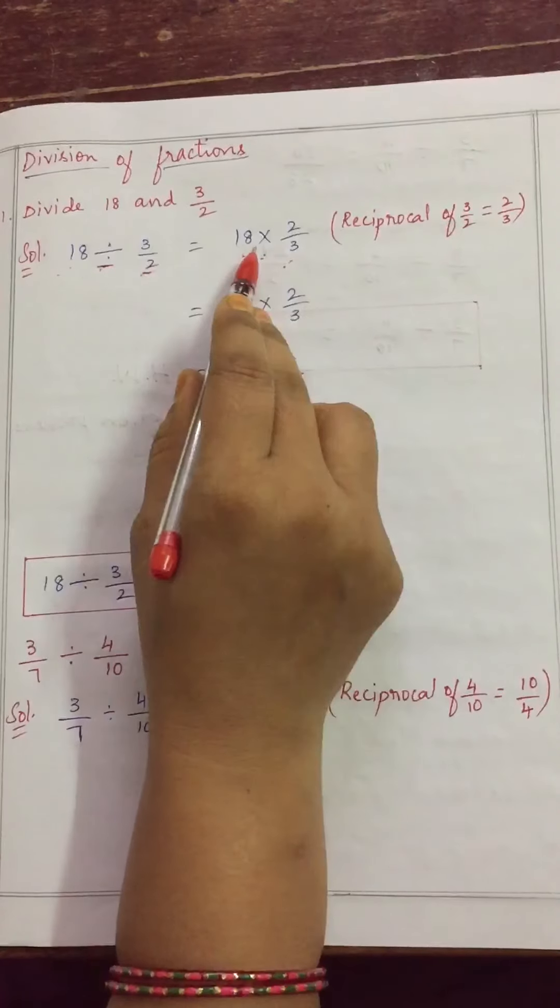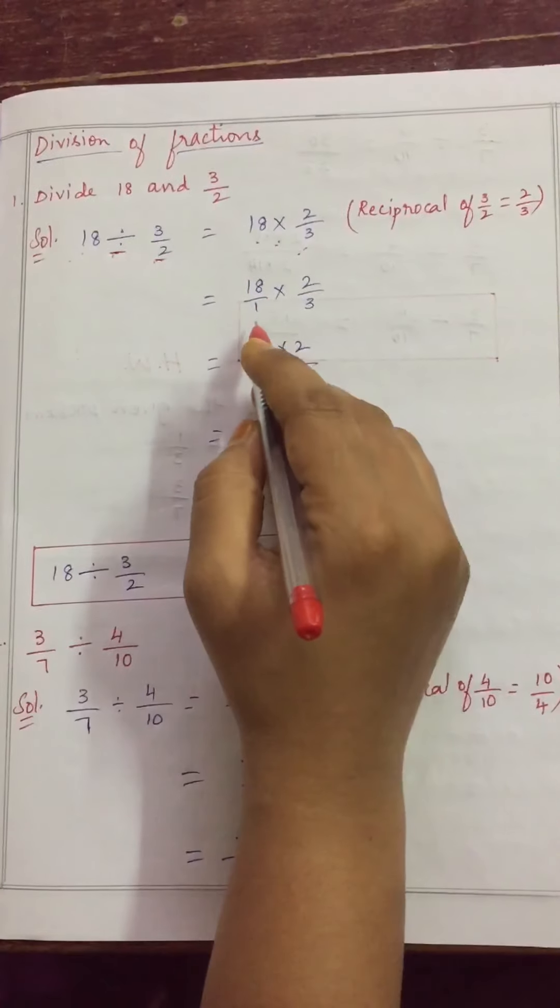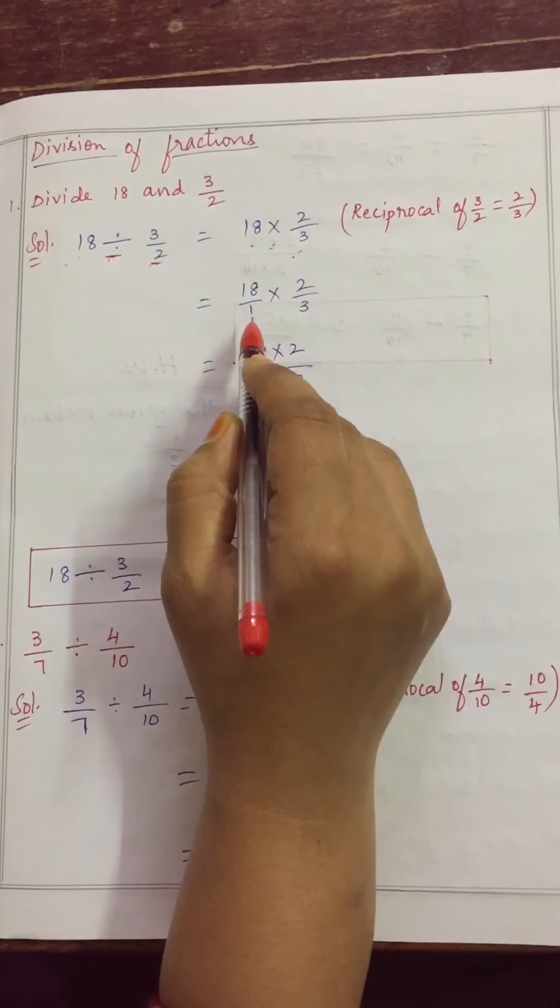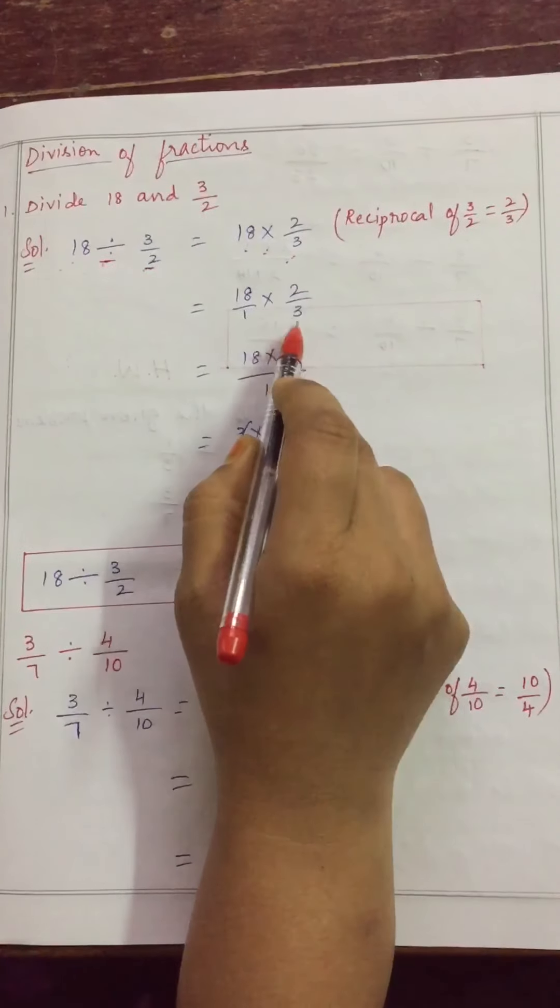So, this 18 as it is into 2 by 3. But 18 can we write 18 by 1? Yes, we can write. In last class multiplication of fraction we have seen. So, 18 by 1 into 2 by 3.